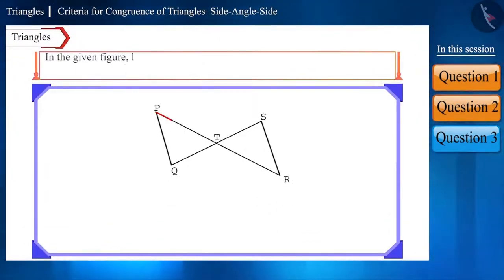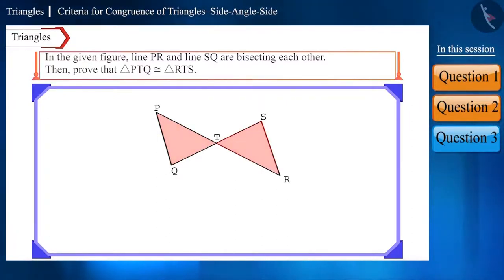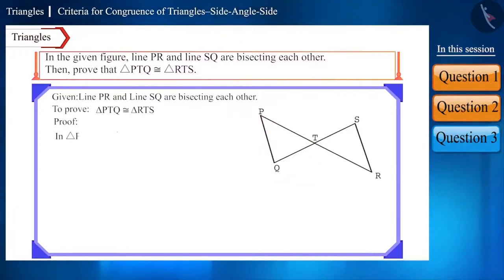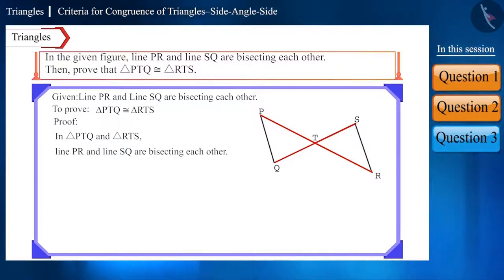In the given figure, line PR and line SQ are bisecting each other. So, prove that triangle PTQ is congruent to triangle RTS. Friends, if we look at triangle PTQ and triangle RTS, then since line PR and line SQ are bisecting each other, therefore,